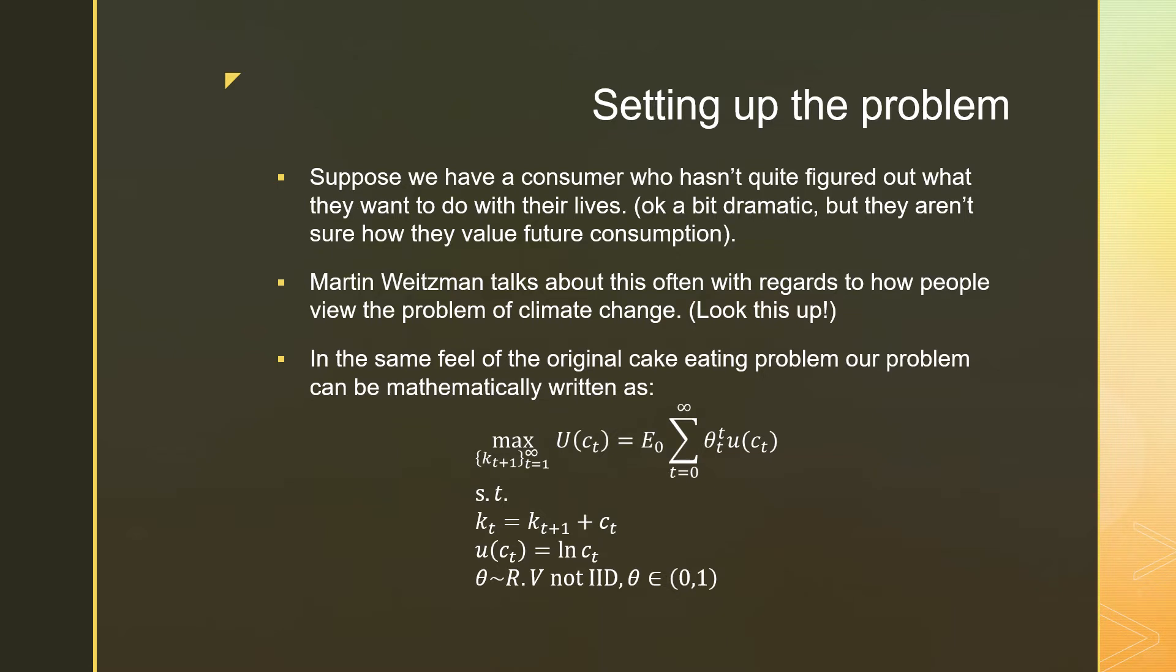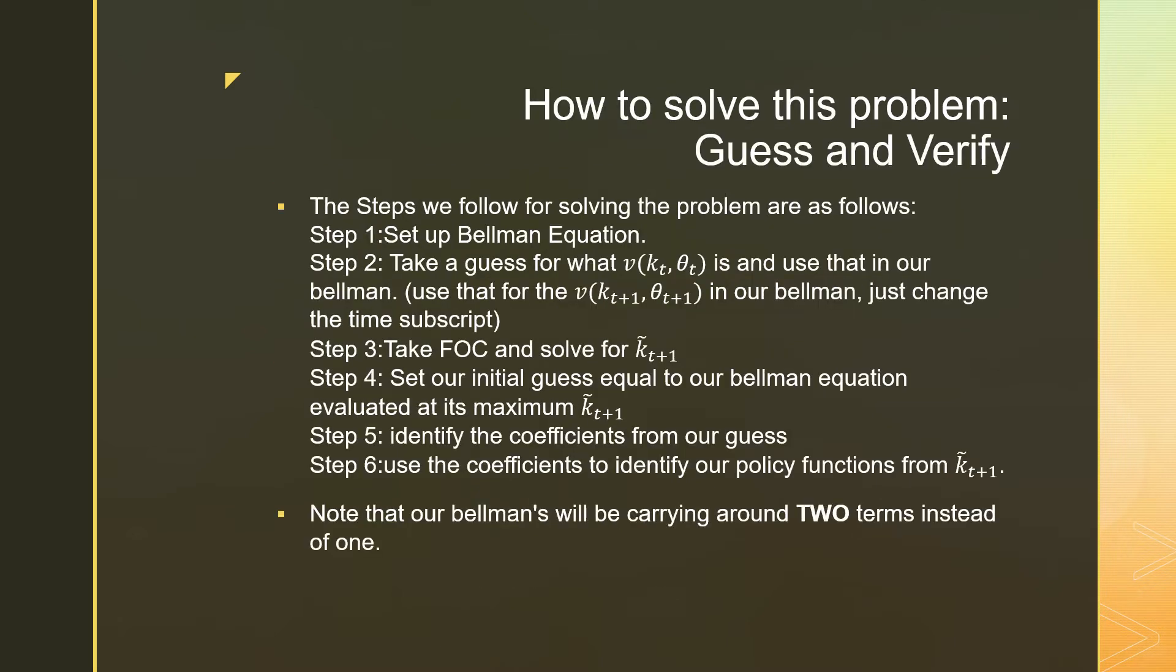The instantaneous utility function is going to be log. And we have this rule for allocating the cake, which is divided up to the cake that you save for later and your consumption.